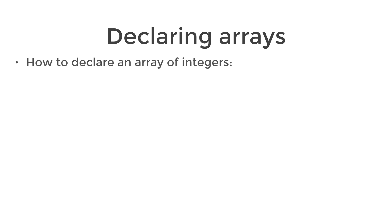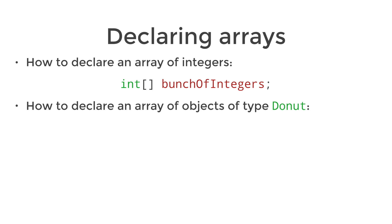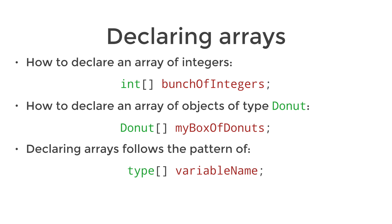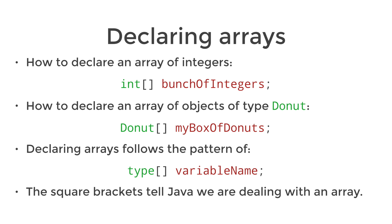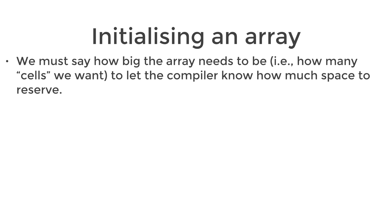Here's how we declare an array of integers: it's int square brackets and then the variable name. However, we can make an array of any type of object, say type donut — so you'd have donut square brackets myBoxOfDonuts as the variable name. Declaring an array always follows the pattern of type square brackets variable name, and the square brackets are basically what tells Java that we're creating an array. The important thing with arrays in Java is that we have to tell the compiler how big the array is going to be before we can use it.